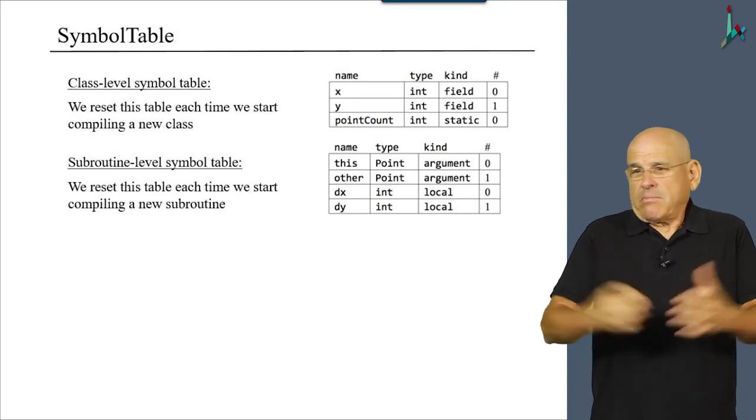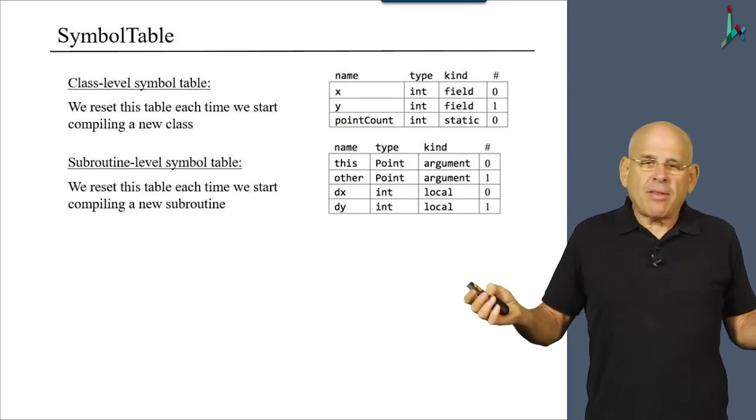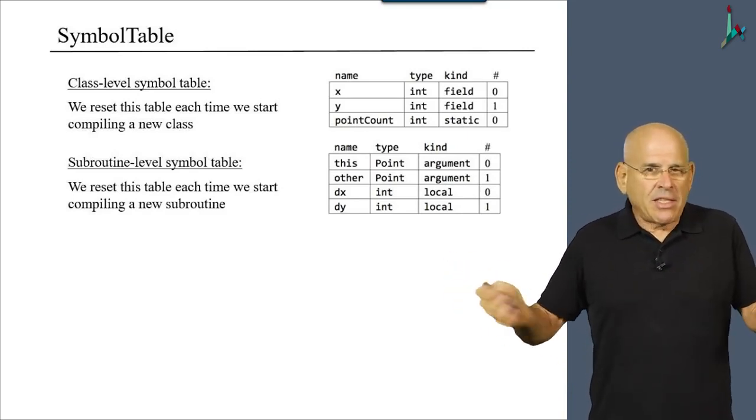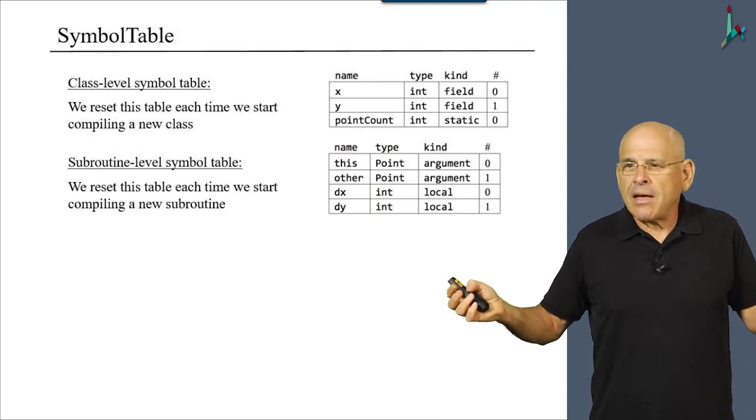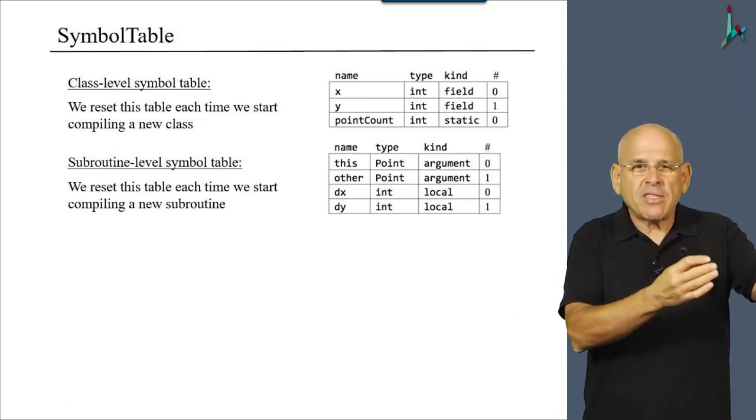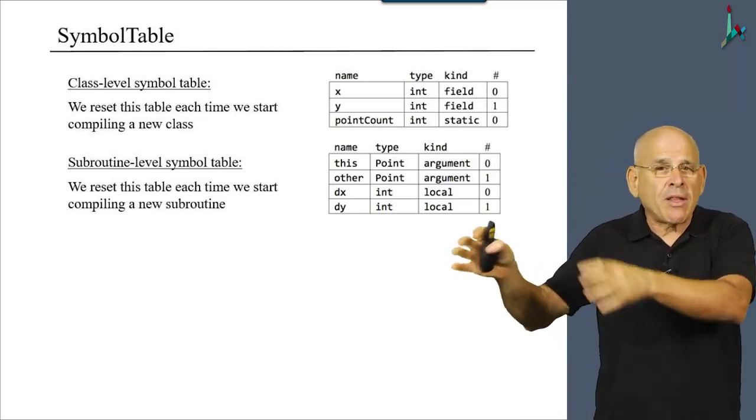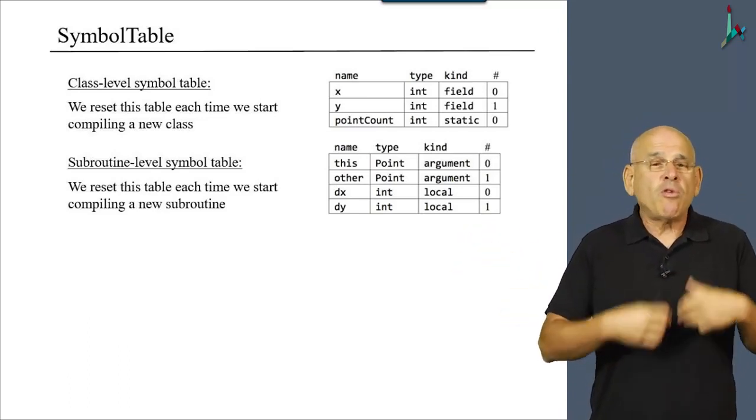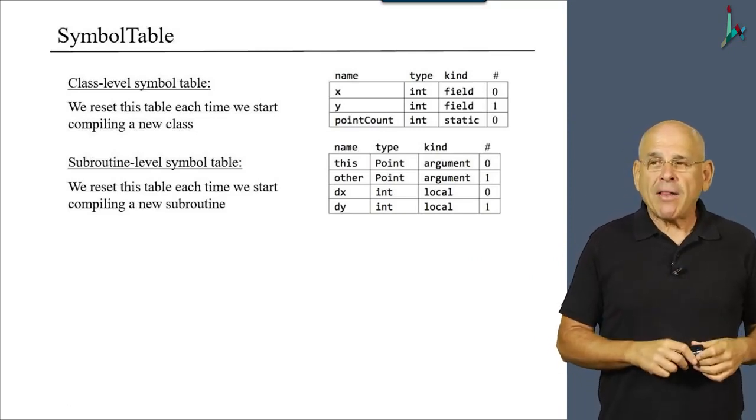Why? Because the previous symbol table that we had is no longer interesting. It's passé, it contains irrelevant information. We already compiled the previous method, we can forget about it. We generated the code. So when we move on to compile the next subroutine, we can reset the symbol table that we used before.